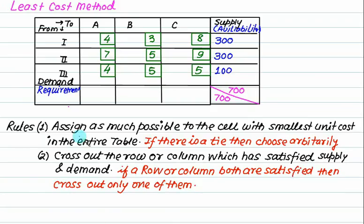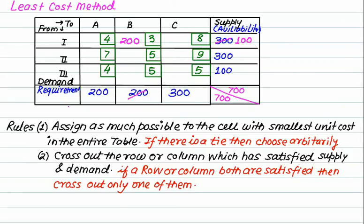Rule number one says: assign as much as possible to the cell with the smallest unit cost in the entire table. So in this one, how much can we allocate? Maximum 200, so allocate 200. If we allocate 200, cancel out this one — 100 is left. Strike out the column. There is no rule that you should go by row or by column. Now don't consider this cell.